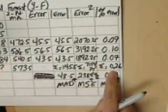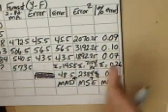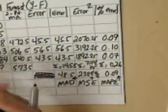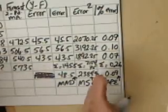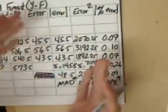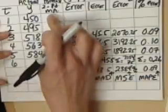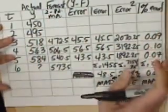MAPE is very useful and easily understood by many people because it reports a standardized percentage of error. It's user-friendly, particularly when comparing two different models — for example, comparing this two-period moving average against a three-period moving average.